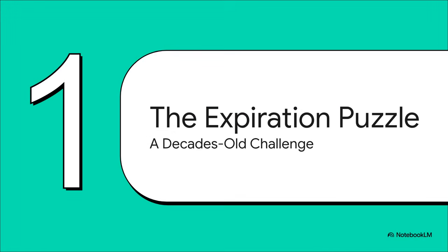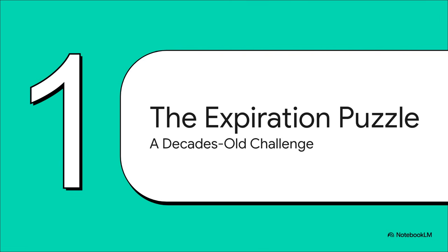All right, so first things first. We need to really understand the heart of the problem. What exactly is this expiration puzzle that has kept landlords up at night for decades? The dream scenario, kind of the holy grail for any big property owner, is stability. The goal is to have a perfectly even, predictable number of leases ending every single month. This means you avoid that massive wave of vacancies in, say, July, and then a ghost town in December. It smooths out your revenue, your team's workload, and your overall risk. It is, without a doubt, the ideal situation.